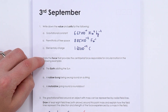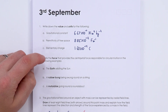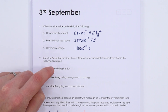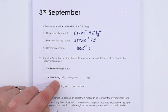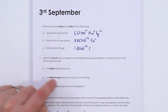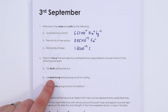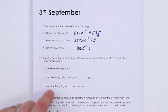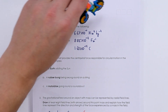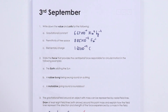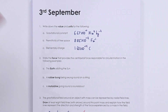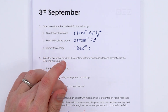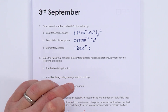Next, we look at the force that provides centripetal force for circular motion. With the Earth orbiting the Sun, it's gravitational attraction. A rubber bung swung on a string is held by tension in the string — that's a practical where you can measure centripetal force. A motorbike going round a roundabout relies on friction between the tyres and the road to provide the centripetal force acting inwards.